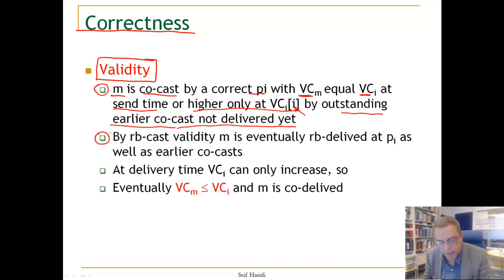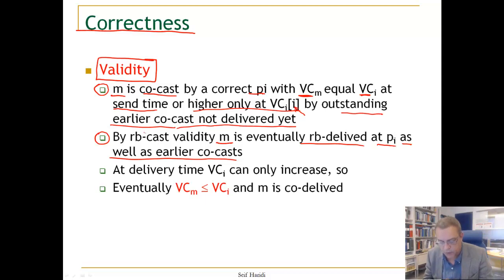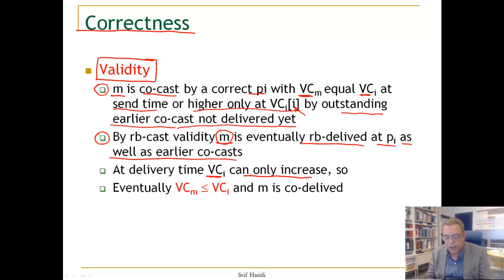Because we are using a reliable broadcast, then by the reliable broadcast validity, M is eventually reliably delivered (RB delivered) at PR. Not only that, but all earlier causally broadcast messages are also delivered by the validity of RB, which means at the delivery time of message M. The local vector clock can only increase, and it will eventually increase by all outstanding earlier causally preceding messages.